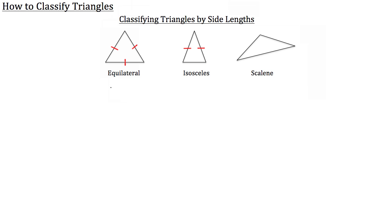The first way is if you have a triangle that has three congruent side lengths, it's called an equilateral triangle. You can see that in the first example here for this triangle to the left. You'll notice that this side, this side, and this leg of the triangle are all congruent, and that's established by the three congruent tick marks.